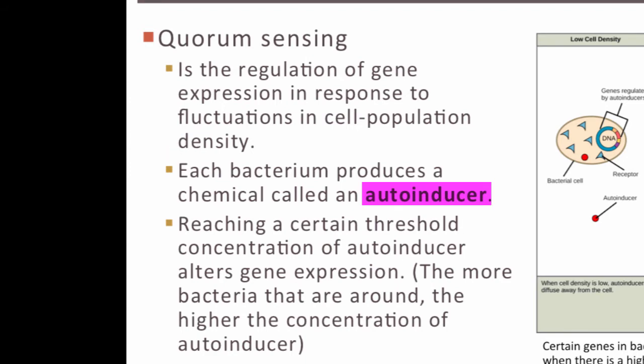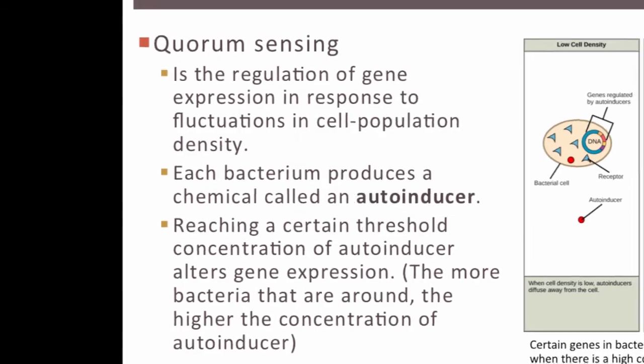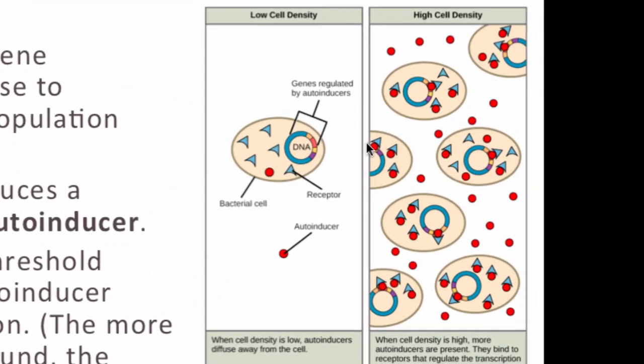Each bacterium produces a chemical known as an autoinducer, which all bacteria make regardless. When you have many bacteria in a small area, you'll have a high concentration of autoinducer. Reaching a certain threshold concentration of autoinducer will alter gene expression — activating or turning off a gene. With just one bacterium, the concentration is too low to turn on a particular gene. However, with many bacteria, the concentration reaches a threshold that can activate a specific gene.